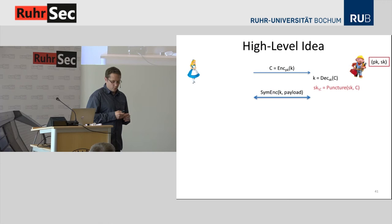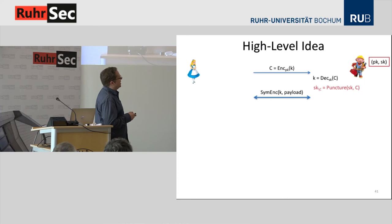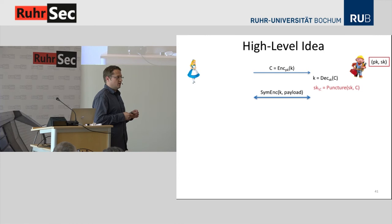How does our protocol work? We simply use a special form of public key encryption scheme to send the session key to the server. The server is able to decrypt it using a secret key and then decrypt all the payload. But there is one additional step: puncturing. The puncture algorithm takes as input the secret key and the ciphertext, and outputs SK without C — a new secret key which is able to decrypt all ciphertexts except for C.